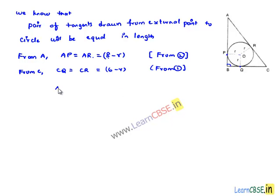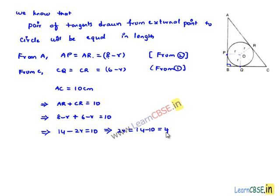Now, consider that value AC is equal to 10 cm, which implies AC can be written as AR plus CR, that is equal to 10 cm, which further implies that AR is 8 minus R, plus CR is 6 minus R, that is equal to 10, which implies 8 plus 6 is 14 minus 2R, which is equal to 10, which implies R is equal to 4 by 2, that is 2 cm.